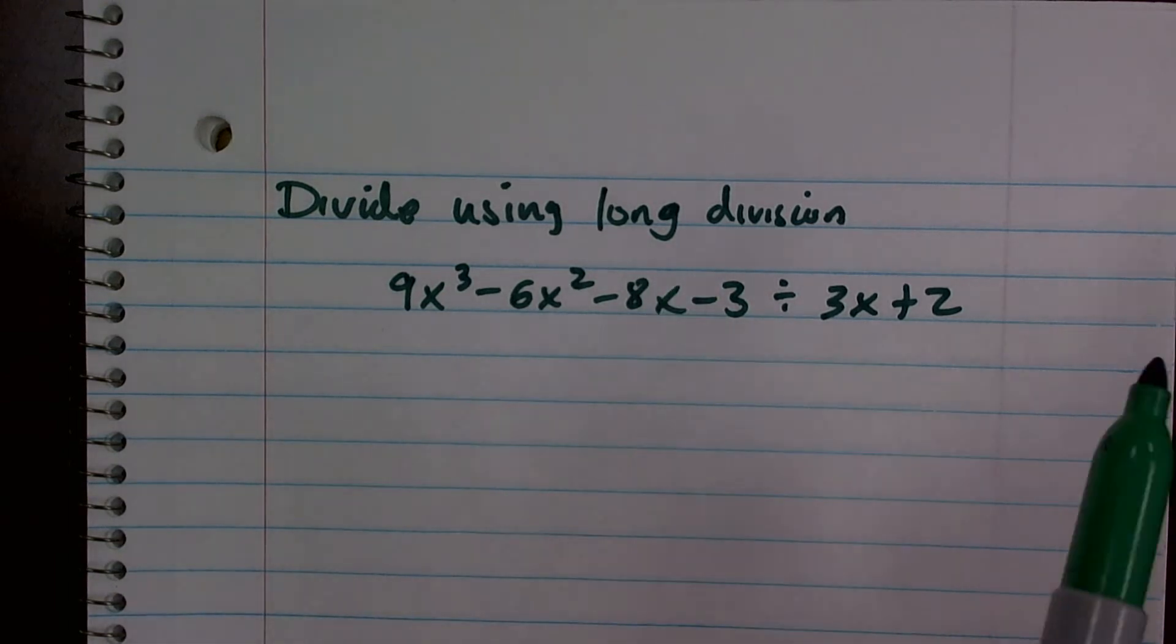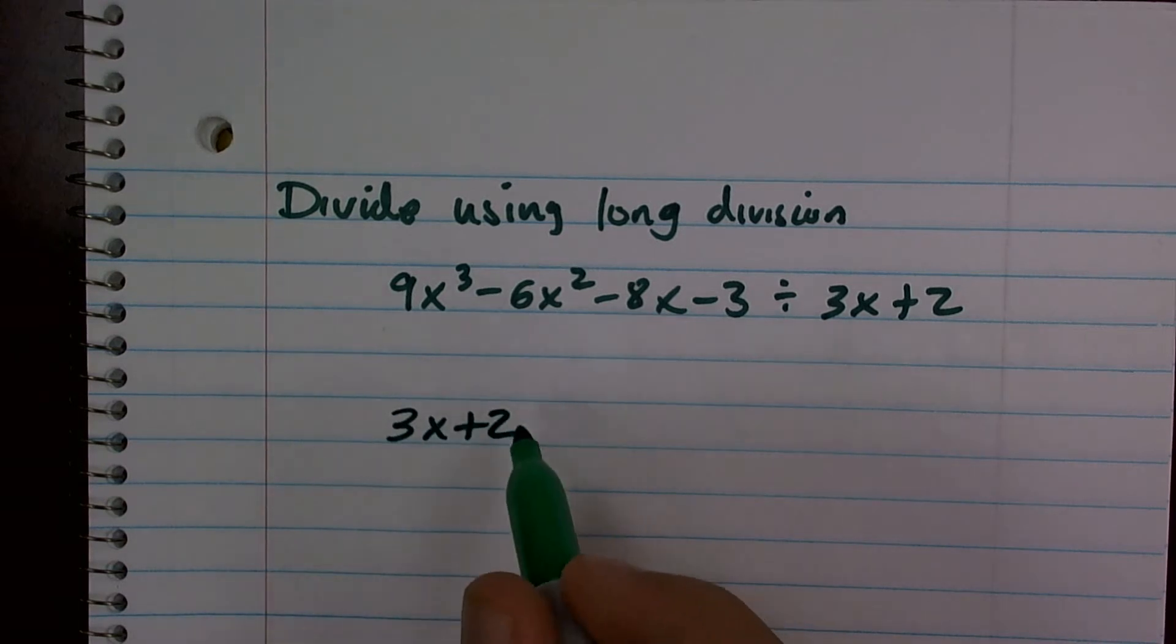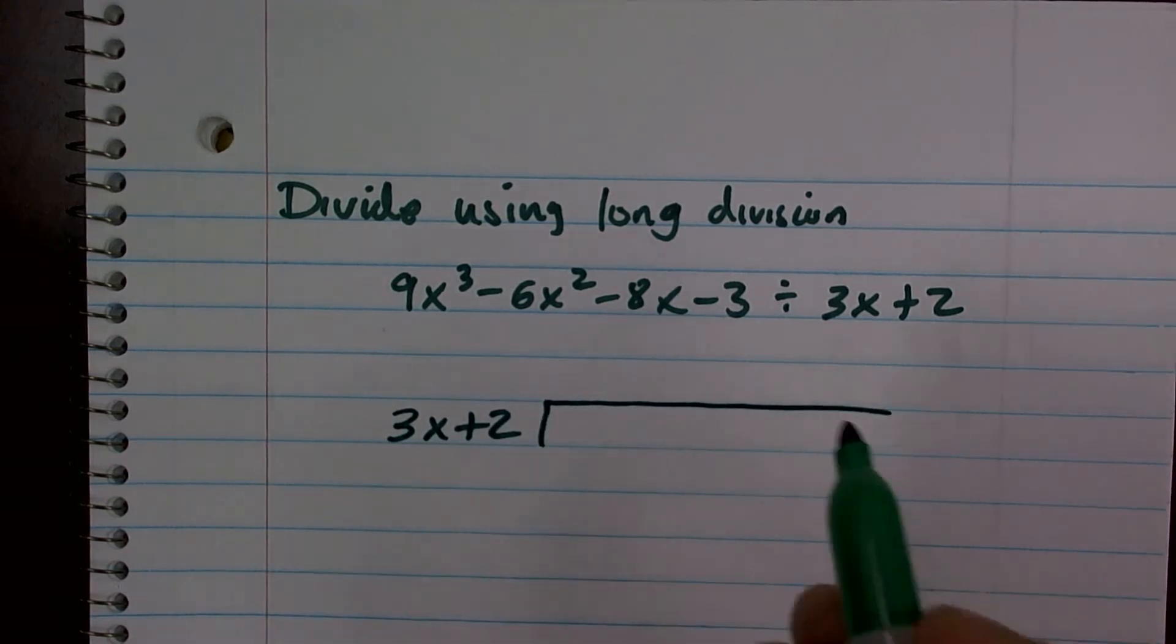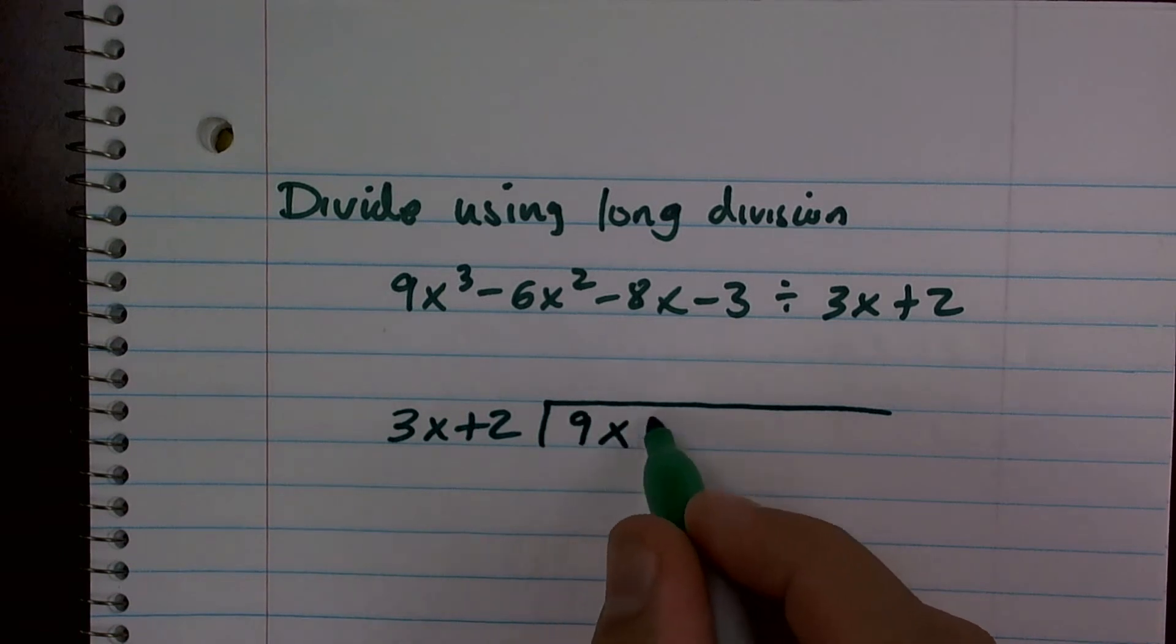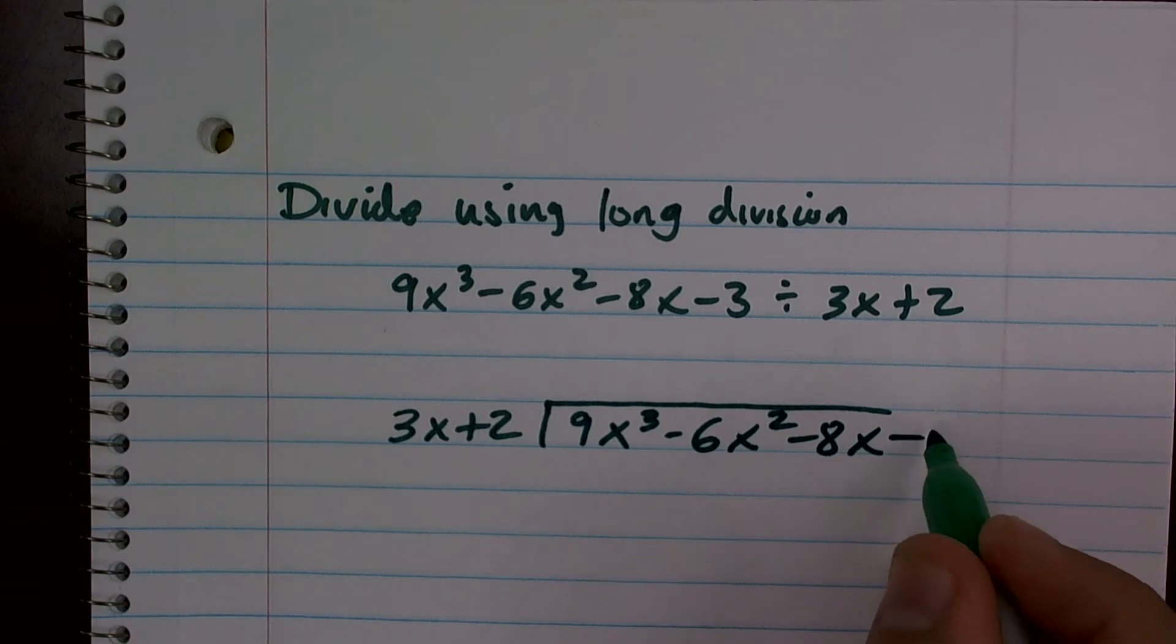So we're going to divide using long division. The main important thing when using long division is we're going to set up 3x plus 2 as our divisor, and then we're going to have our dividend, which is 9x cubed minus 6x squared minus 8x minus 3.